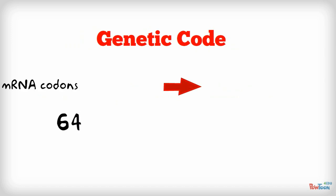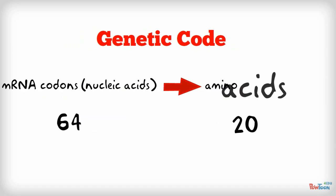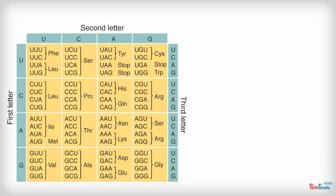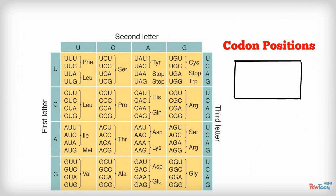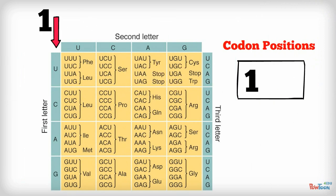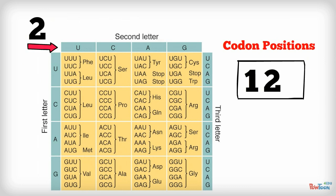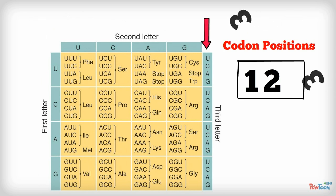The genetic code helps us translate messenger RNA codons into amino acids. The 64 mRNA codons are arranged in a table. Each codon consists of three mRNA nucleotides, or a triplet. The first letter of the triplet is represented by the teal column on the left side of the table. The second letter can be found in the teal row all the way on the top of the table, and the third letter is in the teal column at the right side of the table.